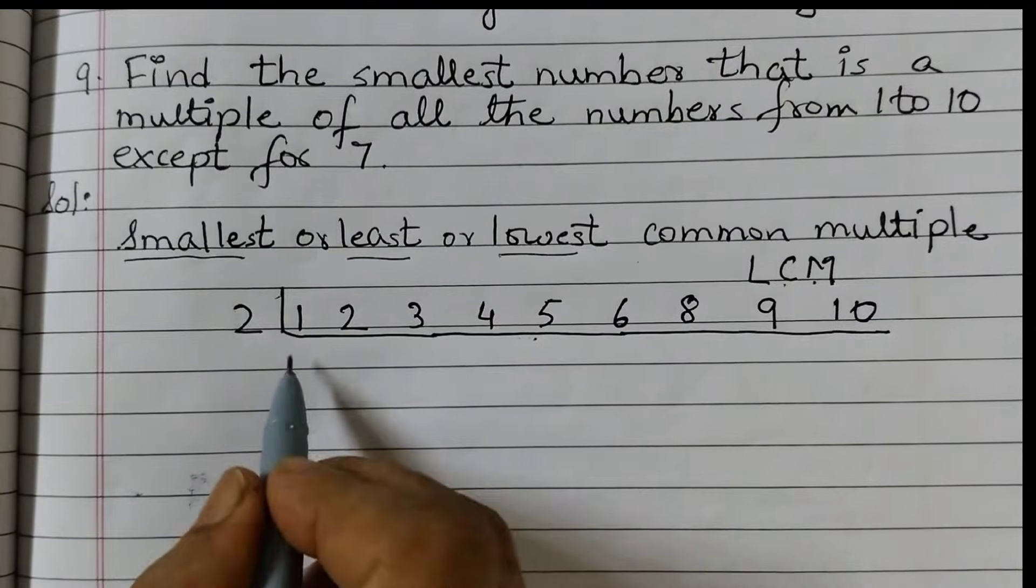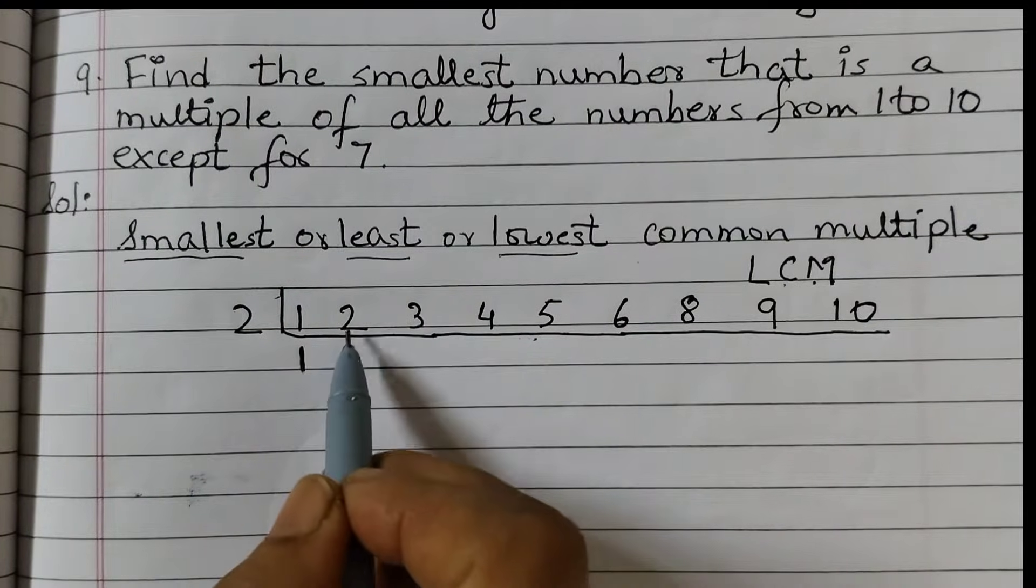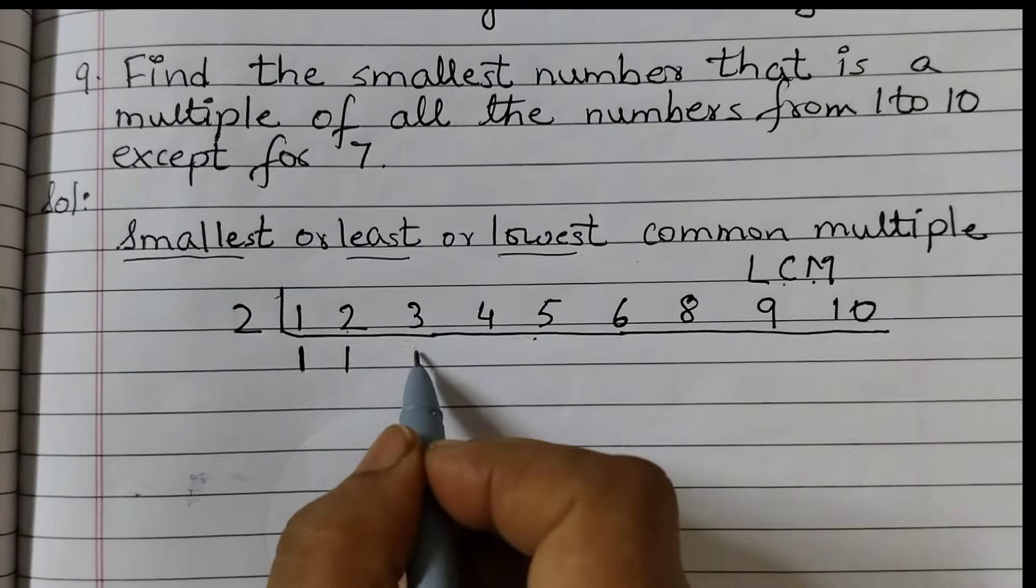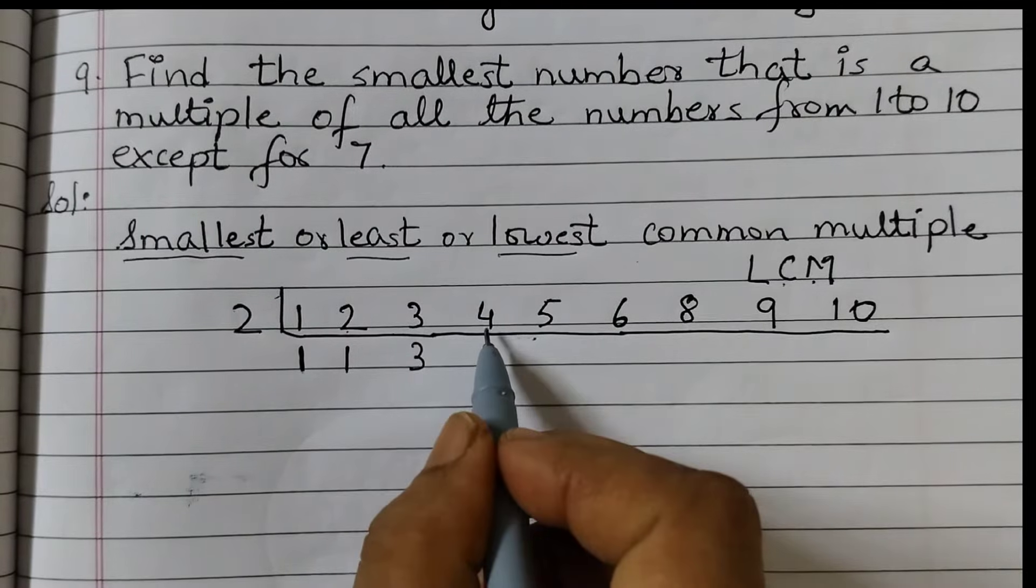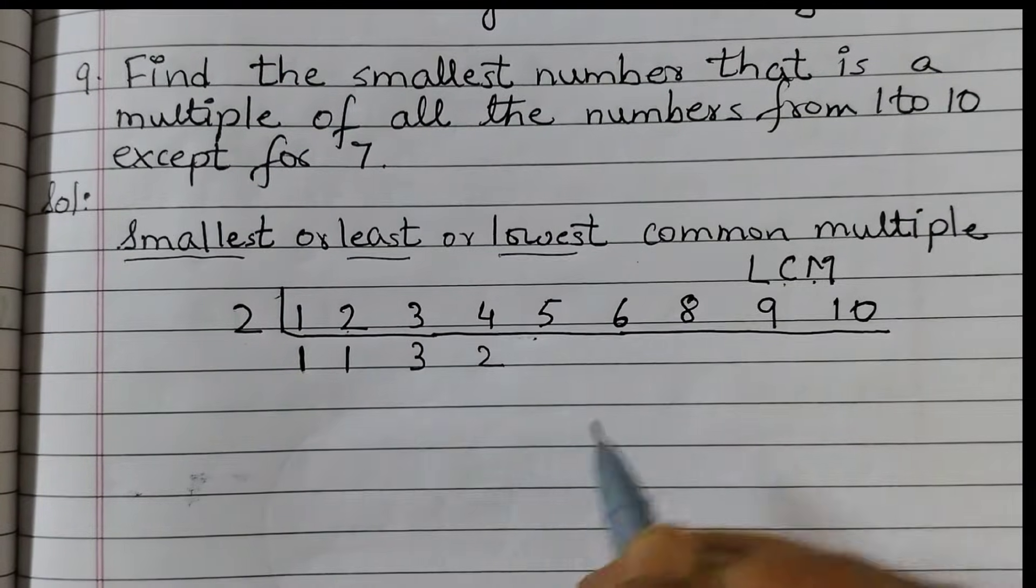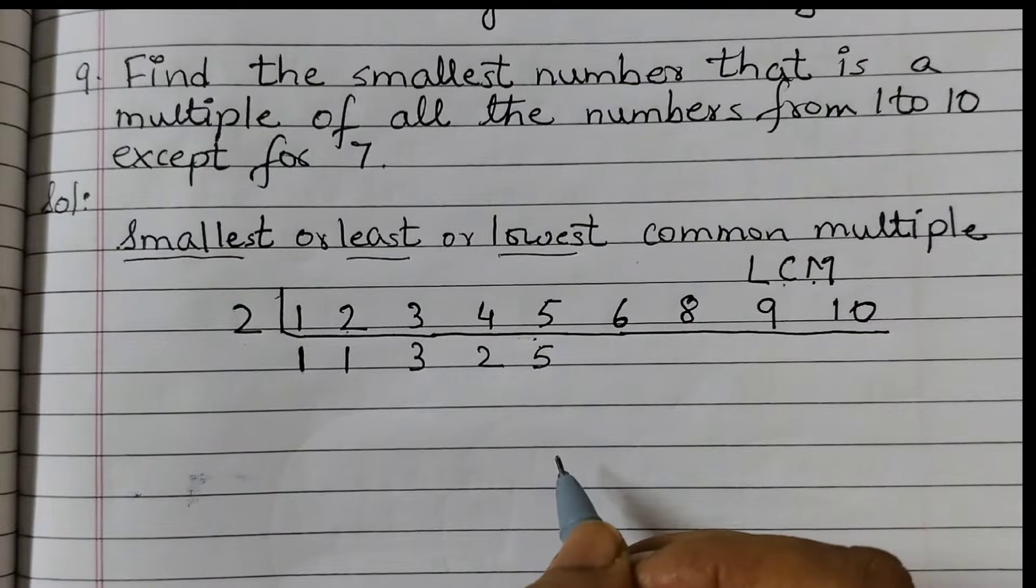1 doesn't go by 2, right? 1 comes down as it is. 2 is here so 2 into 1, 2 ones are 2. 3 is not divisible, it comes down as it is. 4 is divisible by 2 so 2 twos are 4. 5 not divisible. If the number is not a multiple of 2, then it will come down as it is.